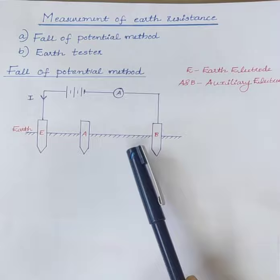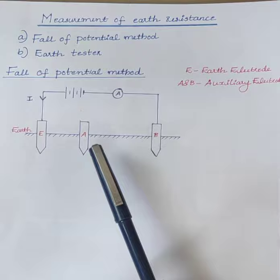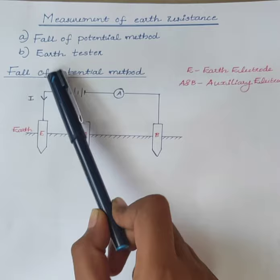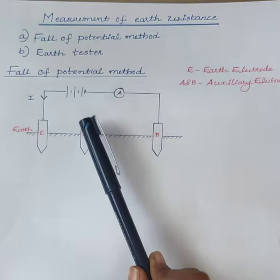So, before providing earthing to the equipment, it is essential to determine the resistance of that particular area. The earth should have low resistance so that fault current easily passes to the earth. Mainly, two methods are used to determine the resistance of the earth: the first one is the fall of potential method, and the second one is using an earth tester.